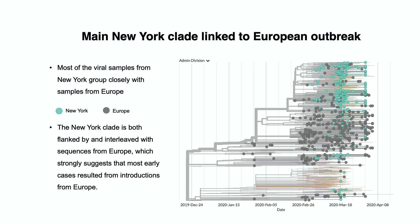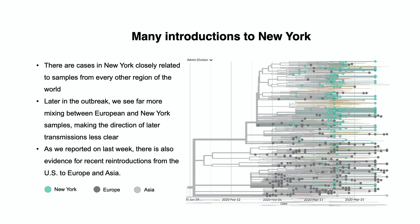Most of the viral samples from New York, which are colored in teal, group closely with samples from Europe, which are colored in gray. The New York clade is both flanked by and interleaved with sequences from Europe, which strongly suggests that most early cases resulted from introductions from Europe. The majority of the New York outbreak was seeded by European introductions. But the contextual sequences from other regions of the world allow us to see additional introductions into New York City.